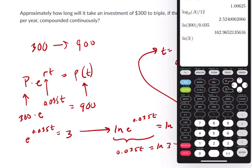Natural log of 3, close parentheses there, but let's do it again. Natural log of 3. Then whatever that is, divide it by 0.035, and we get about 31 years.